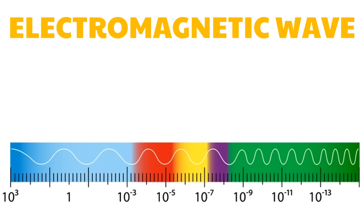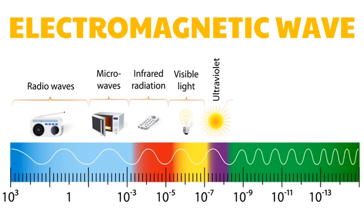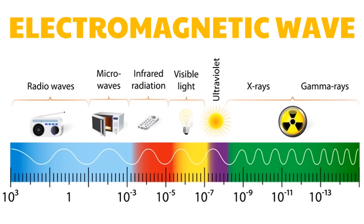Arranged according to increasing frequency, the electromagnetic spectrum displays the following waves: radio waves, microwaves, infrared, visible light, ultraviolet rays, X-rays, and gamma rays at the high frequency and short wavelength end. It is important to note that these waves do not have an exact dividing region.